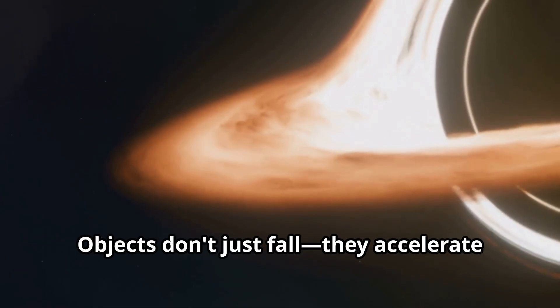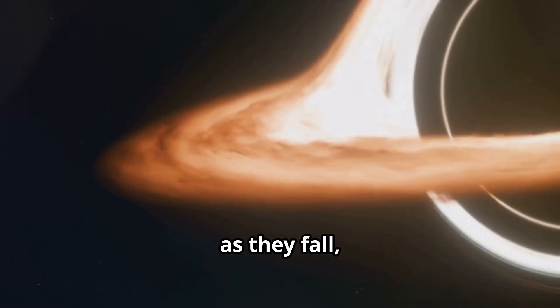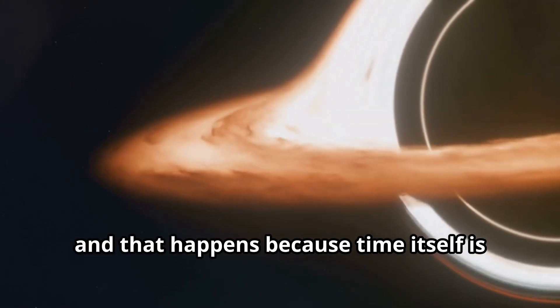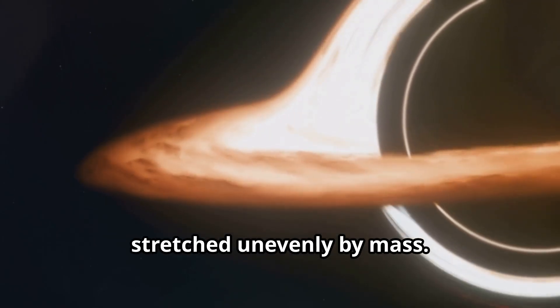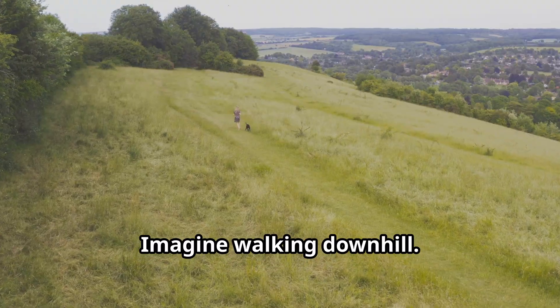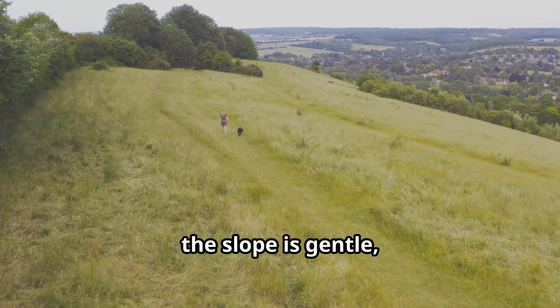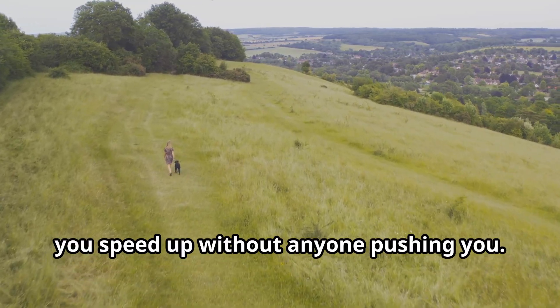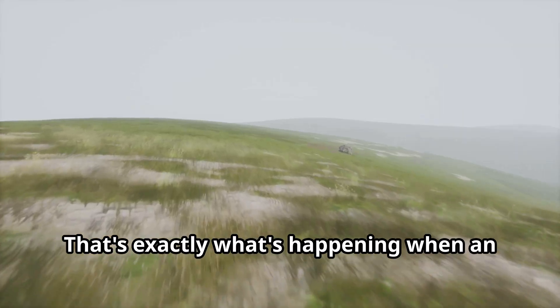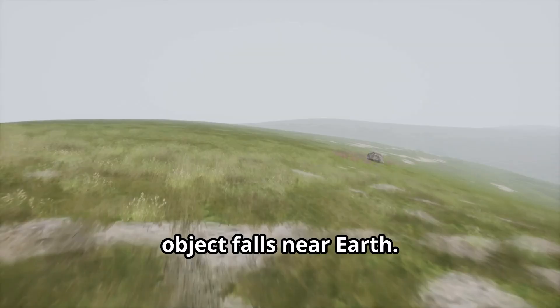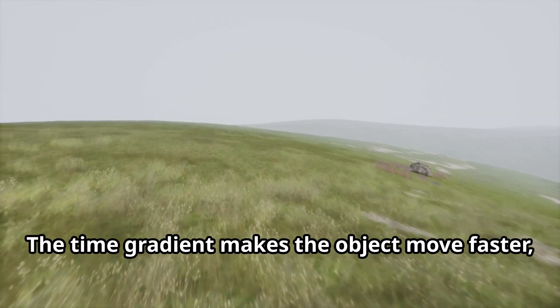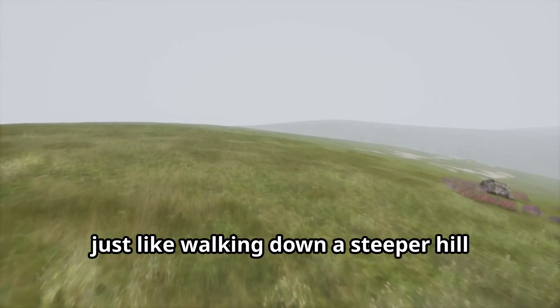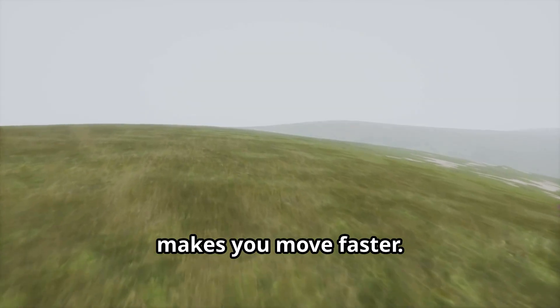Objects don't just fall, they accelerate as they fall, and that happens because time itself is stretched unevenly by mass. Imagine walking downhill. At first, the slope is gentle and you walk slowly. As the slope becomes steeper, you speed up without anyone pushing you. That's exactly what's happening when an object falls near Earth. The time gradient makes the object move faster, just like walking down a steeper hill makes you move faster.